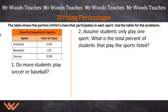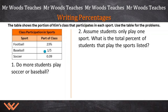Let's read the instructions. The table shows the portion of Kim's class that participates in each sport. Use the table for the problems. The table shows class participation in sports and lists the sports — football, baseball, soccer — and what part of the class, shown as a percentage, a fraction, and a decimal. The question is: do more students play soccer or baseball? Soccer is given as a decimal, and baseball is given as a fraction.